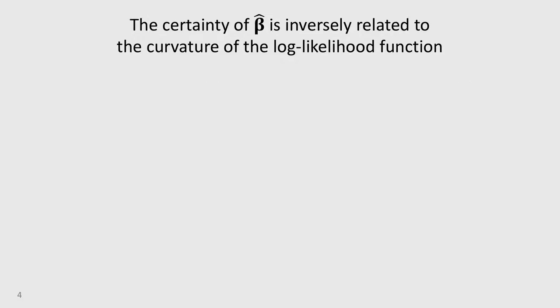And remember, the curvature of a function is related to its second derivative. So in this case, the covariance of this beta term is related to the Hessian of the log likelihood function.